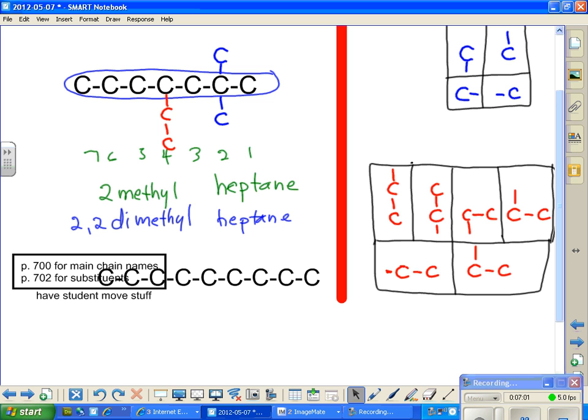Now, when we have different substituents, we have to name them in alphabetical order. That's just the way IUPAC works. So on this last one, I have to name ethyl first. So it is 4-ethyl.